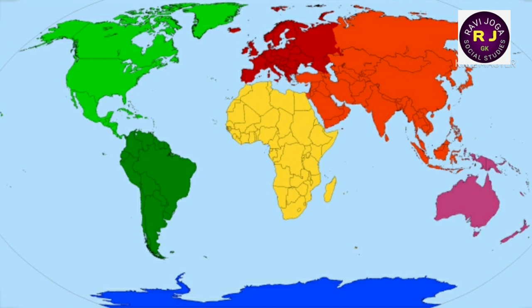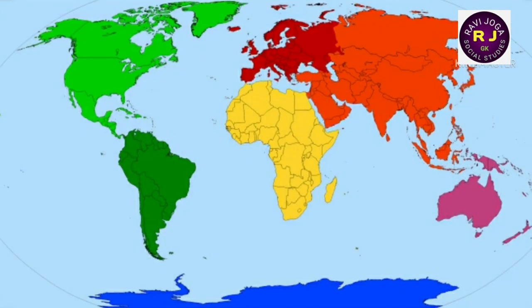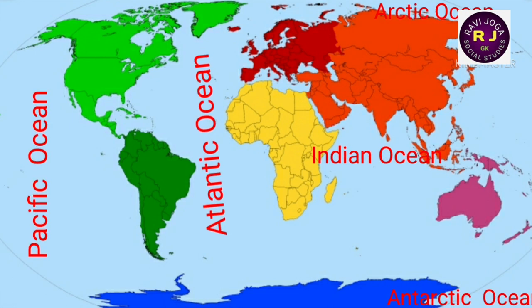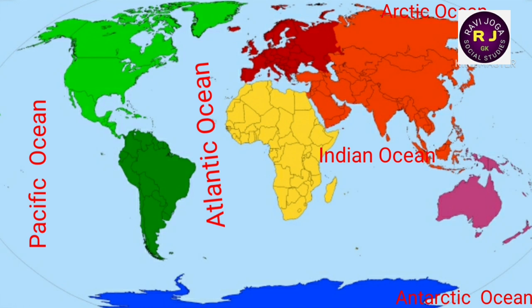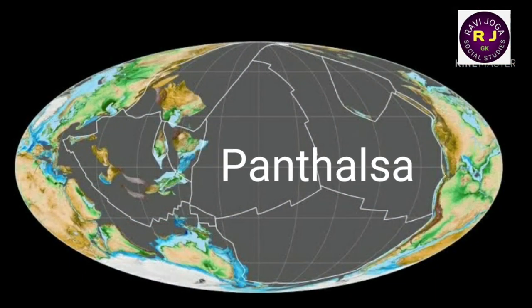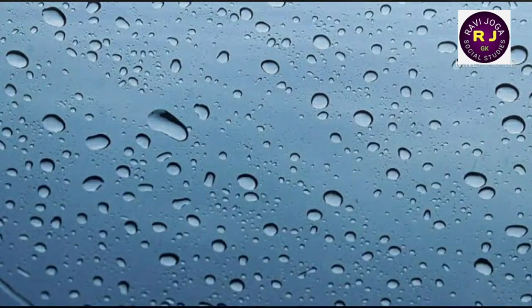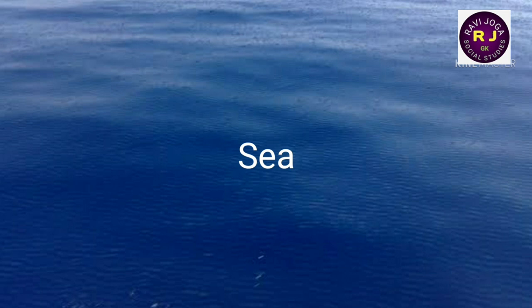Oceans and continents are the first-order landforms. The large water bodies are called oceans, and they are divided into five oceans: Pacific Ocean, Atlantic Ocean, Indian Ocean, Southern Ocean (also called the Antarctic Ocean), and the Arctic Ocean. Millions of years ago, oceans were combined together as a single super-ocean known as Panthalassa. A sea is a body of saline water, partly or fully enclosed by land, and it is often used interchangeably with the ocean.